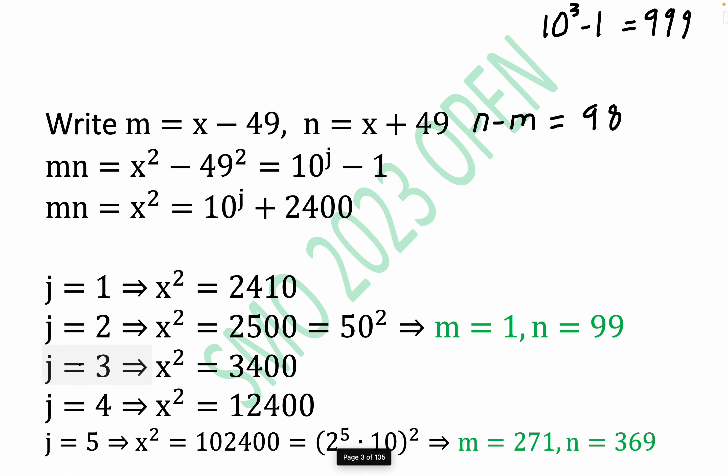Now we keep going. Let's try others. j equals 3, 3,400 is certainly not a perfect square. You have to check all this stuff, but x squared is not a perfect square.